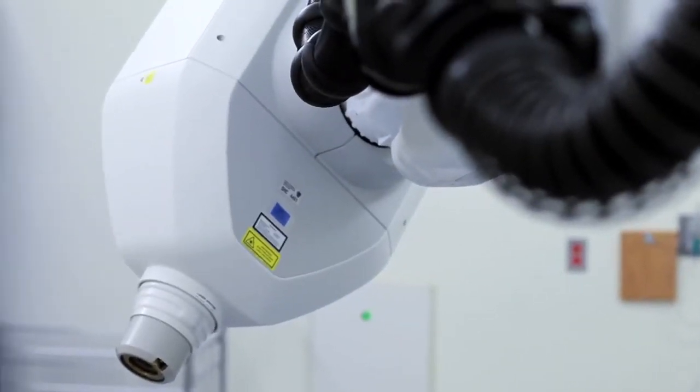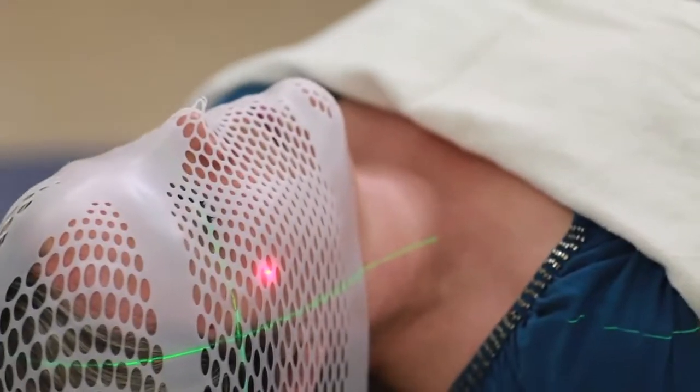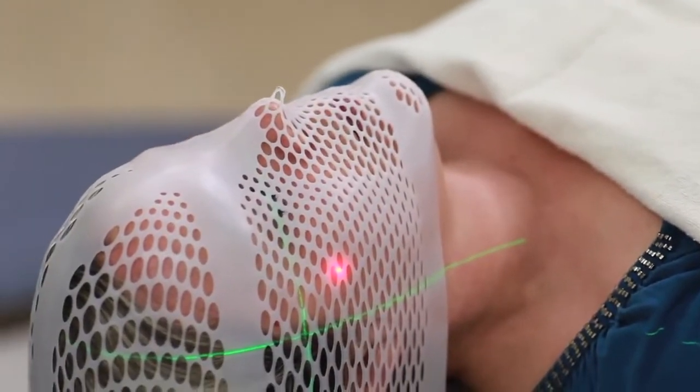One of the advantages that the CyberKnife has over conventional radiation is that it's very precise. It has accuracy of less than a millimeter of error when delivering radiation. We can see the tumor better with improved imaging study, and we can also be able to track the tumor better. And because of that we spare more of the normal tissue. And that gives us the ability to give more intense radiation treatment over a shorter period of time.